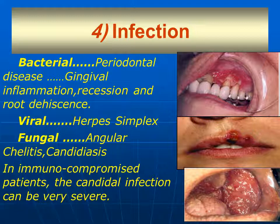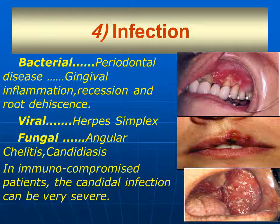Regarding bacterial infections, the patient will suffer from periodontal disease, gingival inflammation, recession, and root dehiscence. For viral infections, the patient will suffer from herpes simplex. For fungal infections, the patient will suffer from angular cheilitis and candidiasis. In immunocompromised patients, the candidal infection can be very severe.